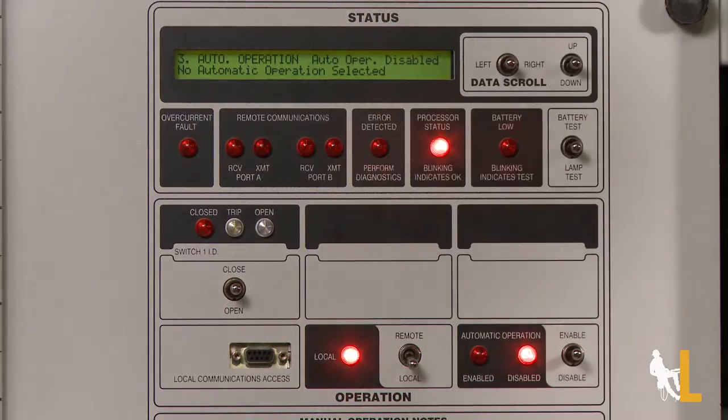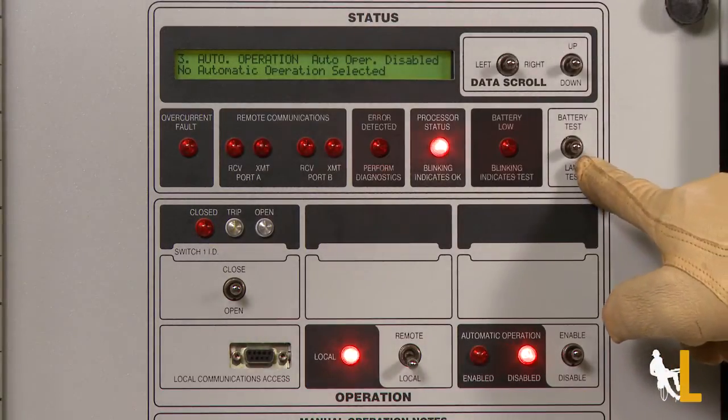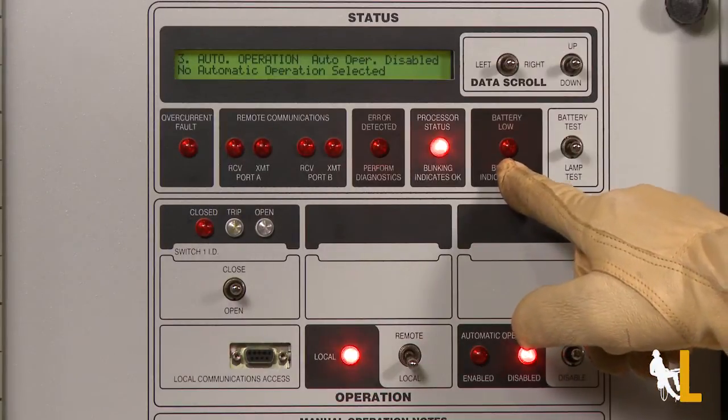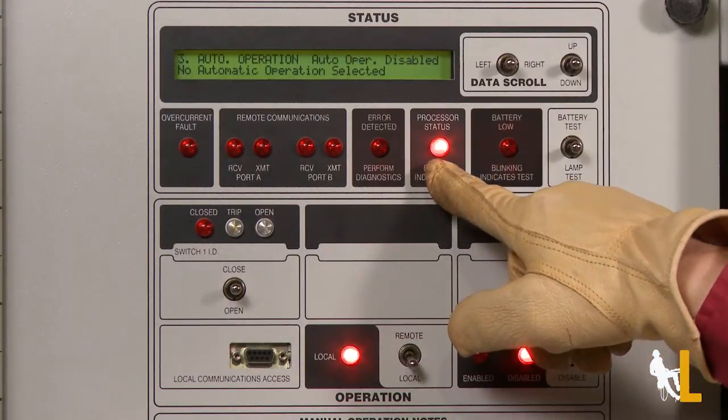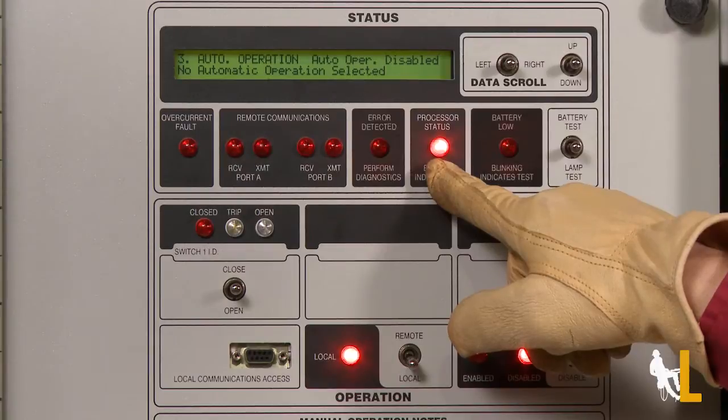Looking at the rest of the panel, we have the battery test and lamp test switch, the battery low light, the processor status light, which if it's blinking means everything is running properly.